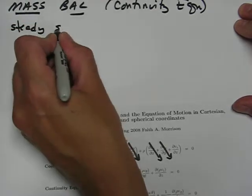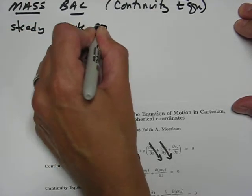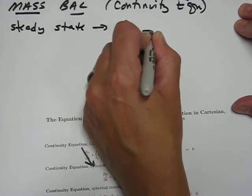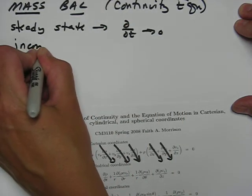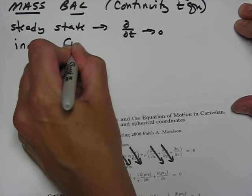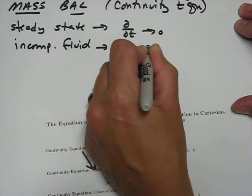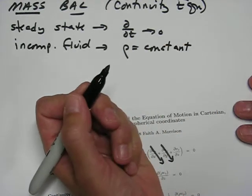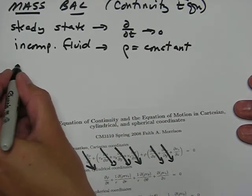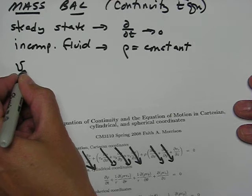We have, at steady state, anything with a time derivative goes to zero. For an incompressible fluid, the density is constant, so any derivative of the density is zero. And we already took unidirectional flow,